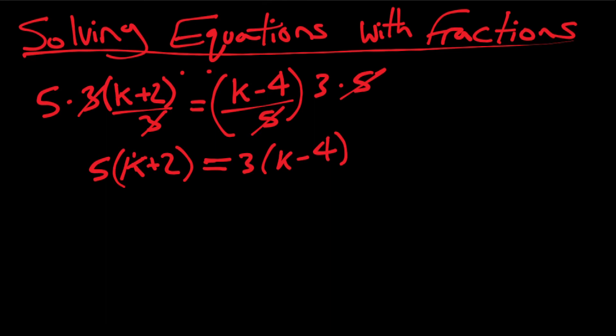But yeah, if you were to cross multiply, you could just multiply one side by three and the other side by five and call it a day. But if you need to show all your steps, this would be the way to do it. And now we're back to our good old distributive property.